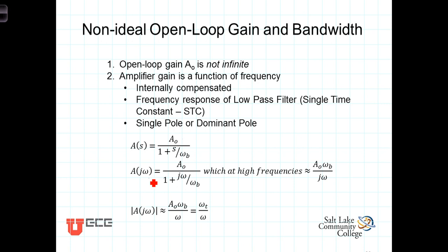The frequency response is found by letting s equal j omega, and we get A of j omega equal to the open-loop gain over the denominator. As the frequency omega continues to increase to where it becomes much greater than the cutoff frequency, this term in the denominator dominates, and we can approximate the frequency response as being A0 omega sub b over j omega. Then the magnitude of the transfer function becomes just A0 omega b over omega.